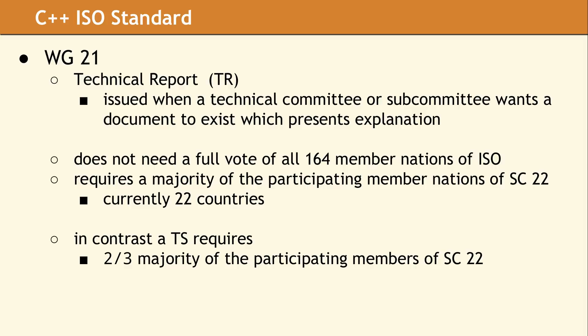For a TS, the margin required rises from a simple majority to a two-thirds majority. The process is even more involved to approve an IS. The first step requires that two-thirds of the SC22 participating members agree with the proposal in order to send the draft to ISO. Then, 75% of the 164 member nations must accept the proposal before it is considered approved.